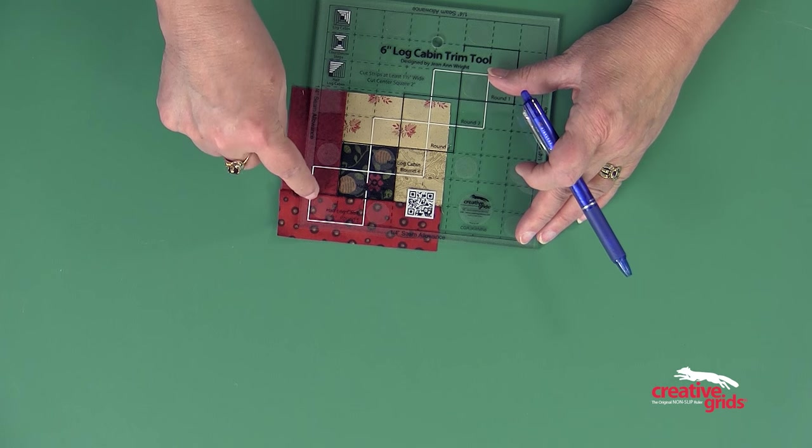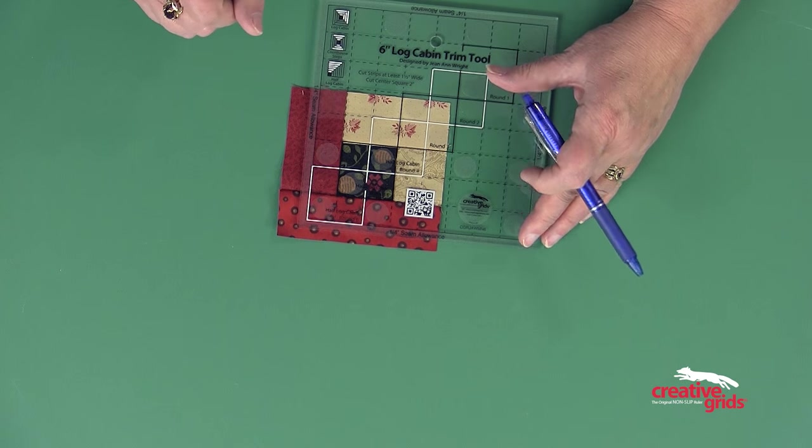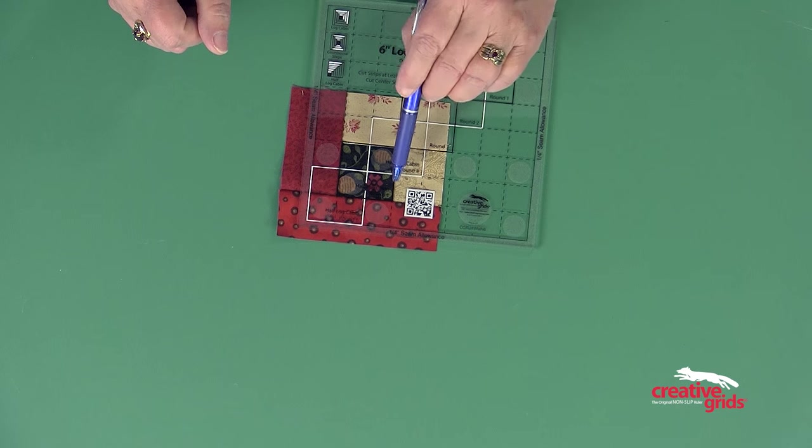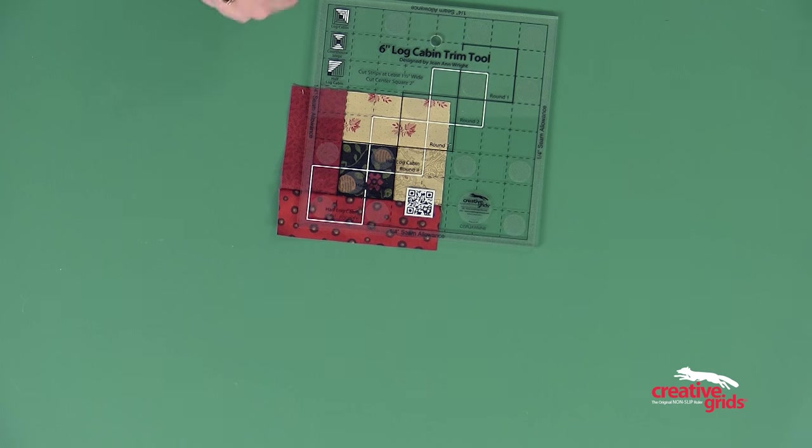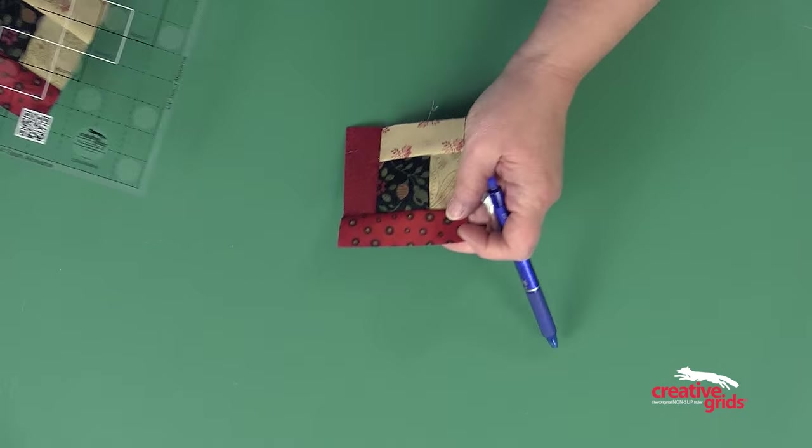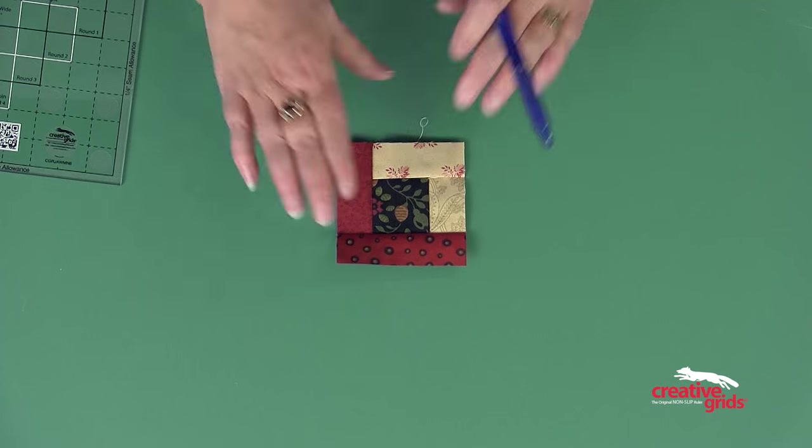Once again, the dashed lines are going to line up with the seams, and the black square is going to be over the center. When I trim that, you'll see that I have a perfect log cabin again.